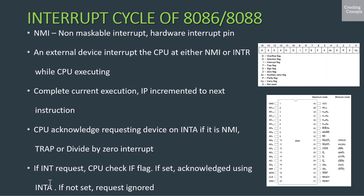If the request is an INTR request, then the CPU checks the IF flag. The IF flag stands for interrupt flag and corresponds to bit number 9 of the flag register of the 8086. If the interrupt flag is set, then the interrupt request is acknowledged using the INTA pin. If the interrupt flag is not set, then the interrupt requests are simply ignored.